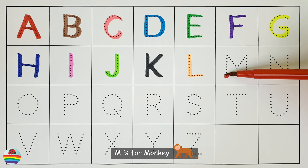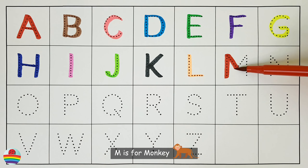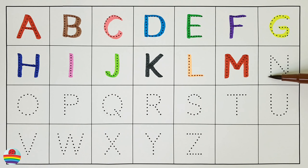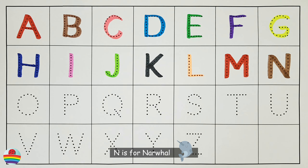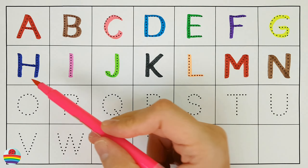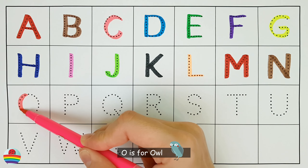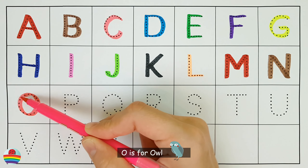M. M is for monkey. M. N. N is for narwhal. N. O. O is for owl. O.